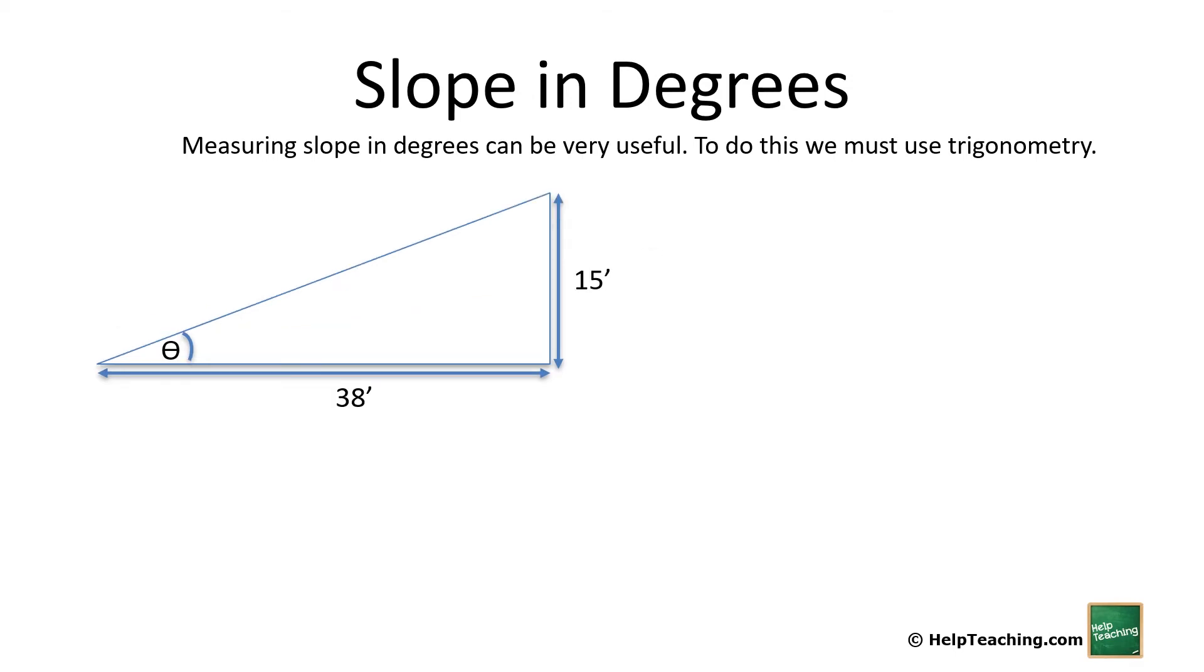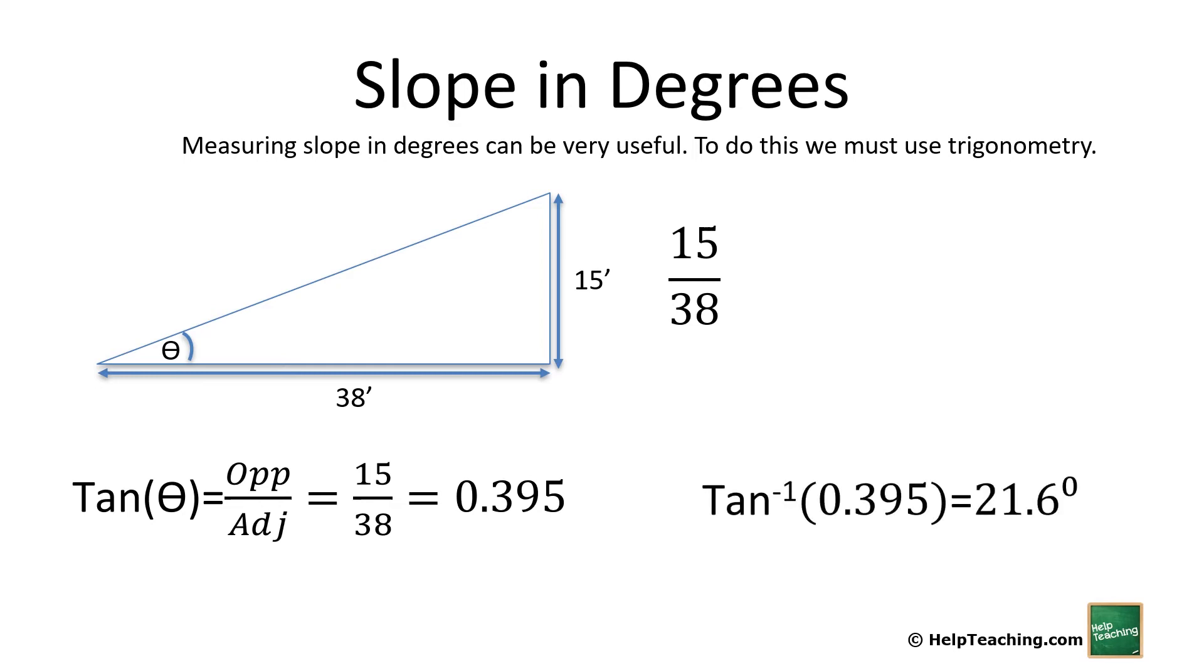Let's try this again with a different one. So this time we have a rise of 15, a run of 38. Again we use the tangent function and we get a ratio of 0.395. Take the arc tangent, we get an angle of 21.6 degrees.